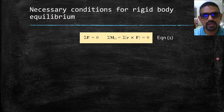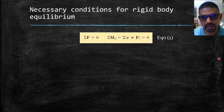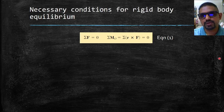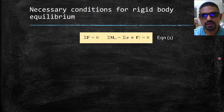Resolving each force and each moment into its rectangular components, we can express the necessary and sufficient condition for the equilibrium of a rigid body with the following six scalar equations.